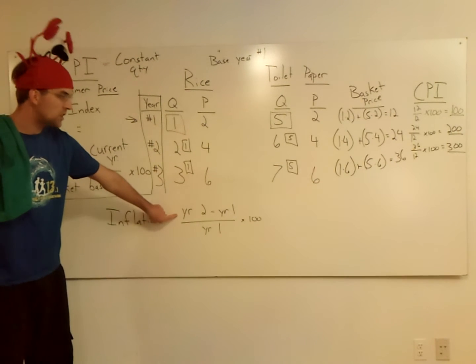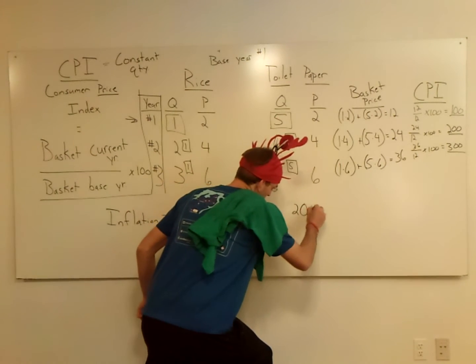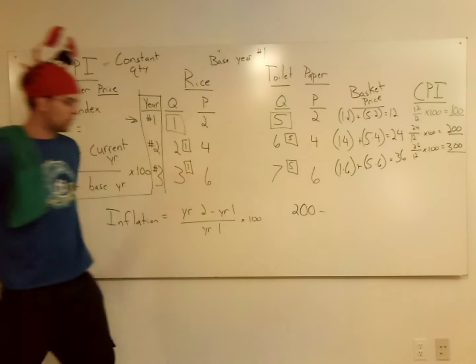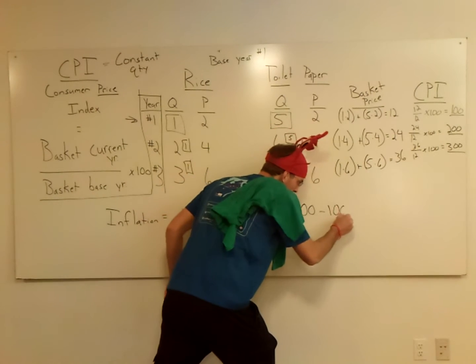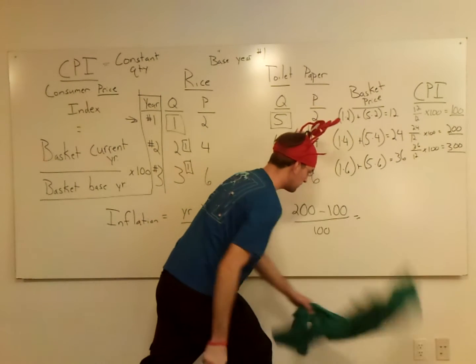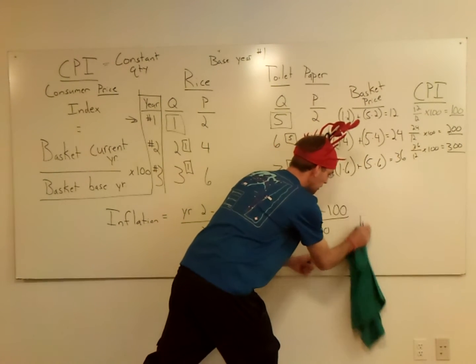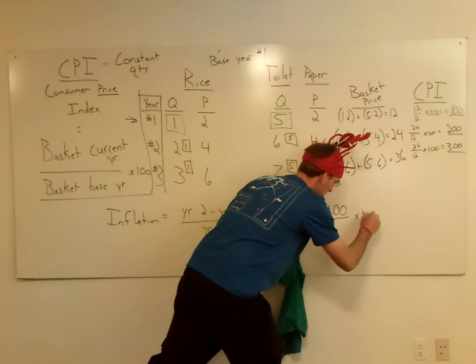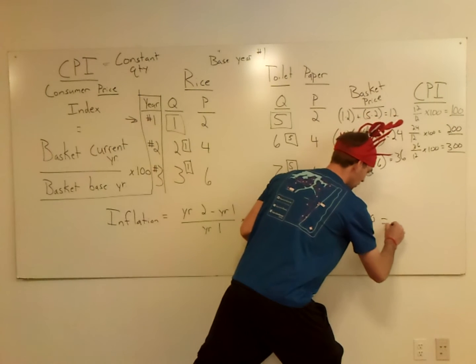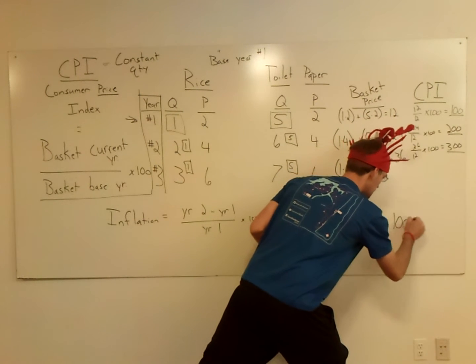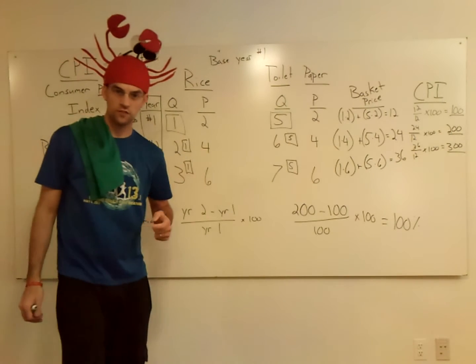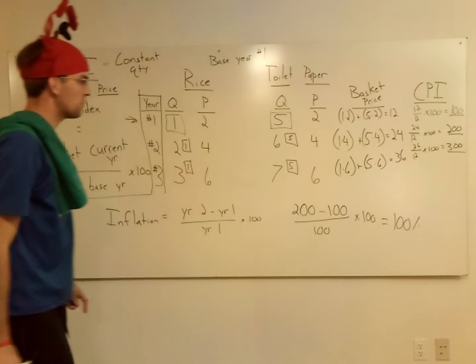So my second year CPI is going to be 200 minus my first year CPI which is 100, all over 100. I got to multiply by 100. Let's see, that's going to be 100 over 100 equals 100% inflation. That's a rough year's inflation right there, but the numbers work out.